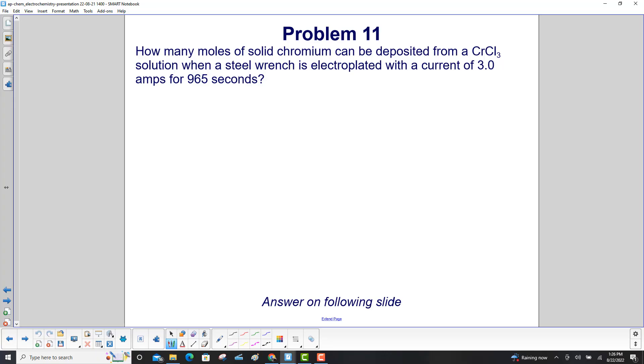How many moles of solid chromium can be deposited from a chromium chloride solution when a steel wrench is electroplated with a current of 3.0 amps for 965 seconds?